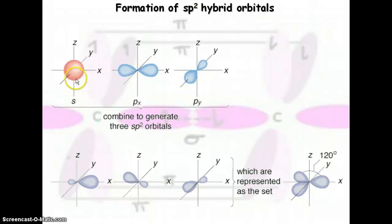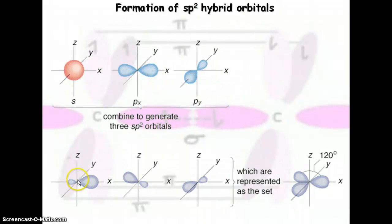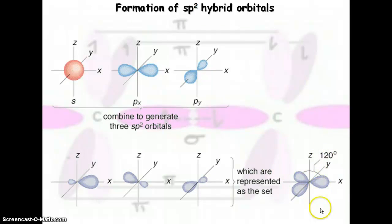Looking at this with the C2H4 molecule: the s orbital and two p's from the carbon atom hybridize to form the sp2 orbitals. All of these orbitals are going to have a trigonal planar geometry, but that also leaves us one p orbital that will be perpendicular — up and down. The pz will still be there up and down.